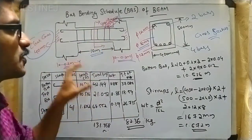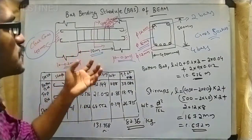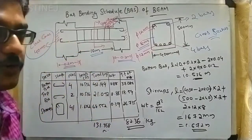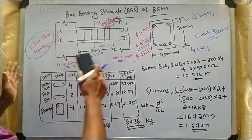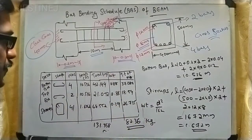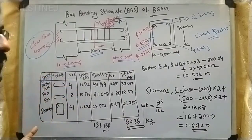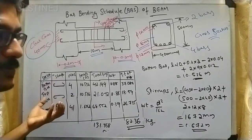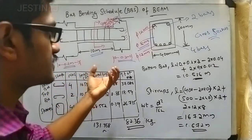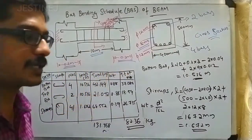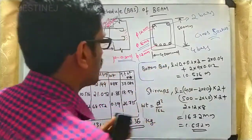Our intention is to calculate the total length of steel reinforcement and also the total weight of this steel reinforcement. This is a bar schedule, so we have to note down each column: description, shape, numbers, length, total length, weight, and total weight.